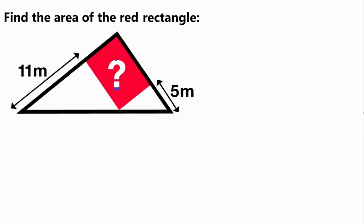This rectangle is inside a triangle. We are given that the distance from the corner of the triangle to the edge of the rectangle is 5 meters on this side, and 5 meters on this side. The edge of the rectangle here is 11 meters, and we need to find the red area.